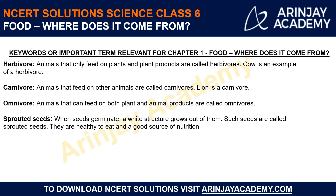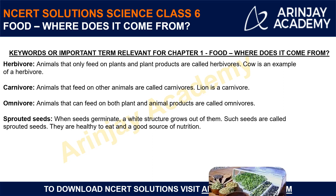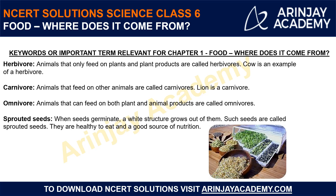The next term is sprouted seeds. You may have seen your mother soak seeds — rajma, pulses, or any gram — overnight. By morning, the seeds germinate and a white structure grows out, meaning the seeds have sprouted. Such seeds are called sprouted seeds and are healthy to eat, being a good source of nutrition. In vegetarian diets, sprouted seeds are actually the main source of protein, so you should definitely consume them.